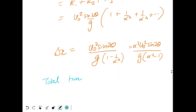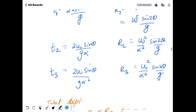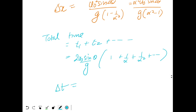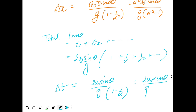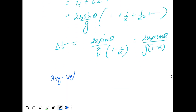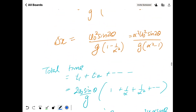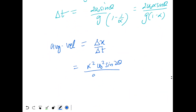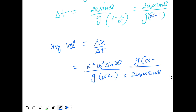For total time, similarly summing 2u0 sin theta / g times (1 + 1/alpha + 1/alpha² + ...), the total time Δt = 2u0 sin theta / g · 1/(1 - 1/alpha) = 2u0·alpha·sin theta / (g(alpha - 1)). Now the average velocity is Δx / Δt. So that is [alpha² u0² sin 2theta / (g(alpha² - 1))] divided by [2u0·alpha·sin theta / (g(alpha - 1))], with a correction that denominator factor is alpha - 1.